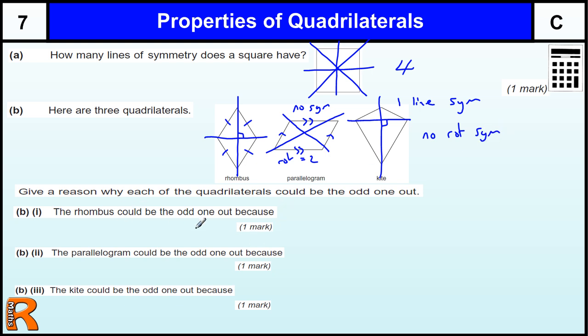Okay, so if we've got one reason why the rhombus could be the odd one out. Well, the clearly obvious one there is all the sides are the same, all equal sides.